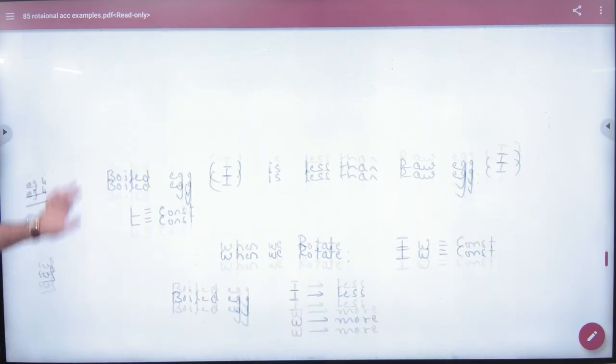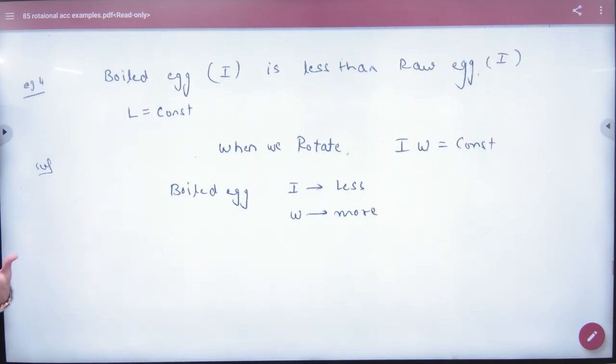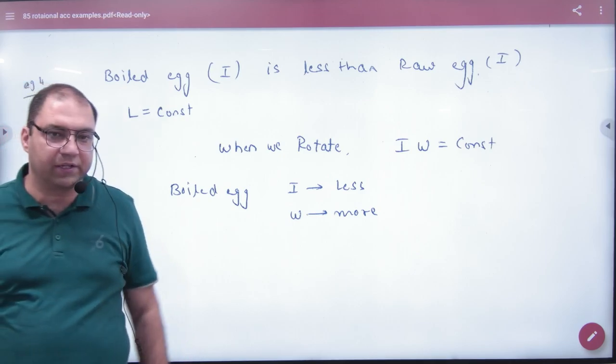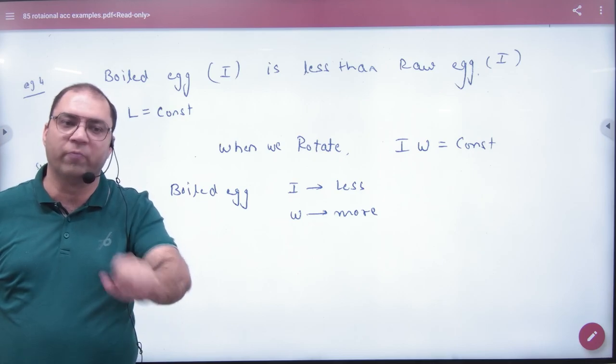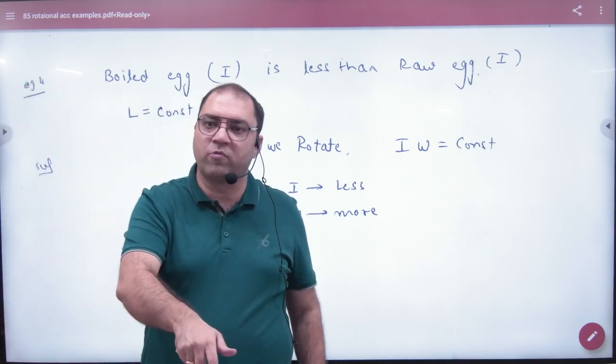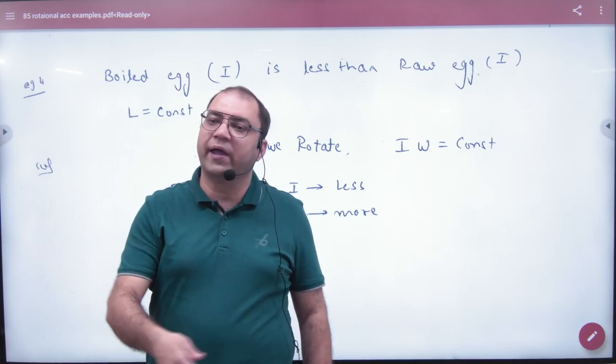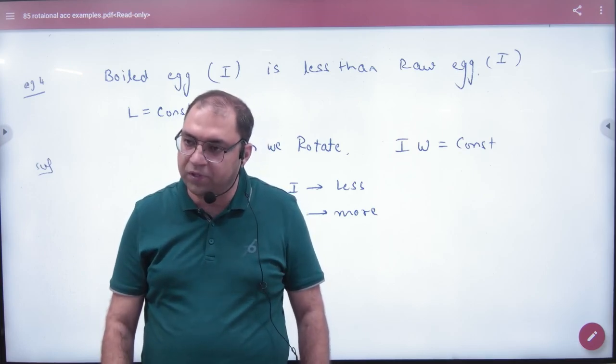One boiled egg and one raw egg, I will spin on the table. Which will spin more, omega? When you leave it, the angular momentum becomes constant because you have stopped the external torque.